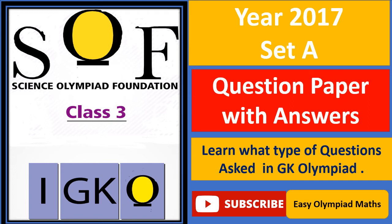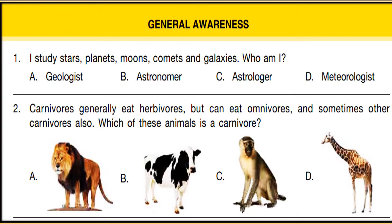Hello viewers, welcome to IS the Olympiad Maths. This is the IGKO paper for class 3, year 2017. These are questions from the original question paper with answers at the end of the video. In this video you will learn what type of questions are generally asked in the GK Olympiad. The first section is General Awareness, so let's start with question 1.